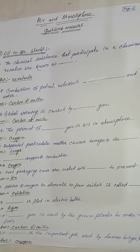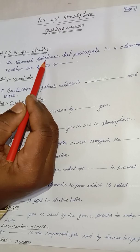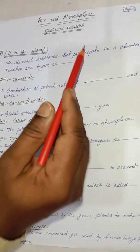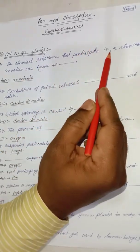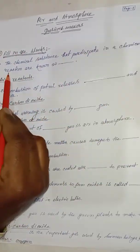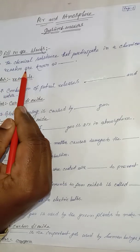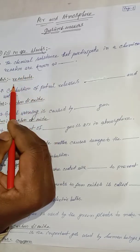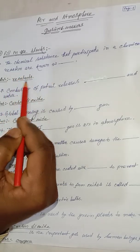First, fill in the blanks. The chemical substances that participate in a chemical reaction are known as reactants.